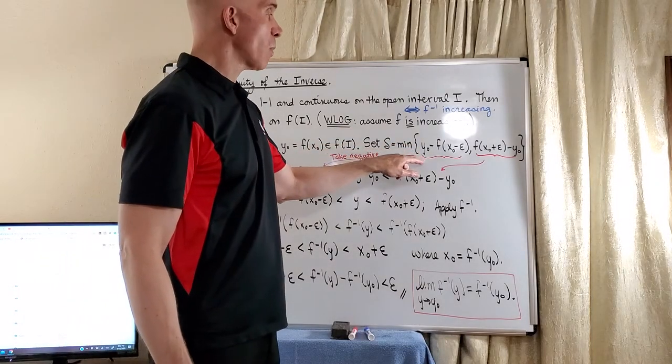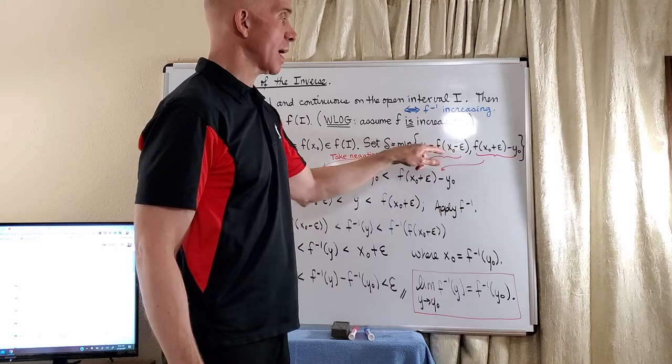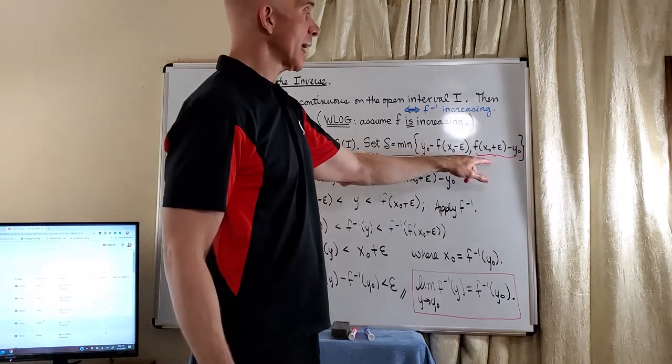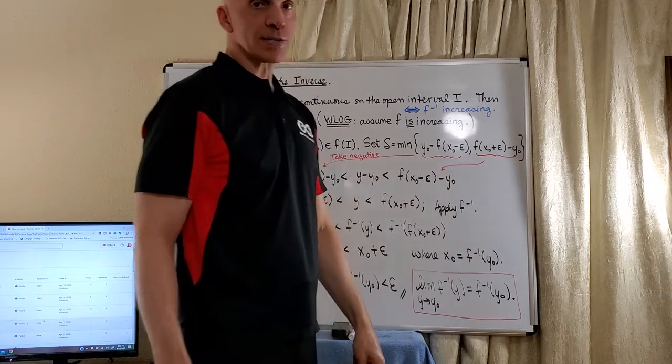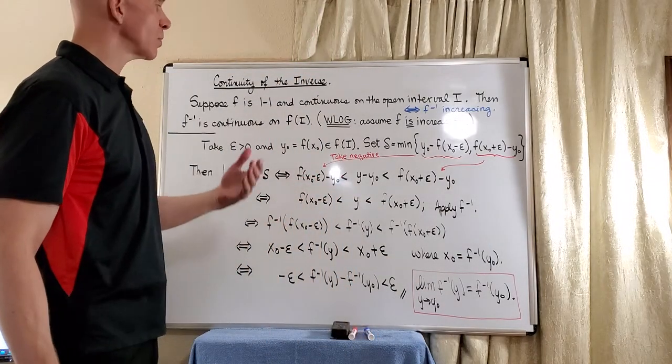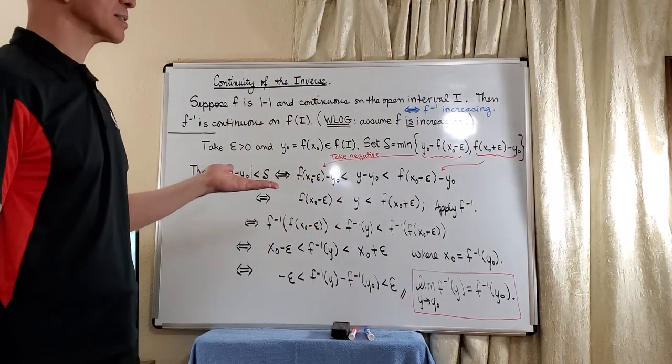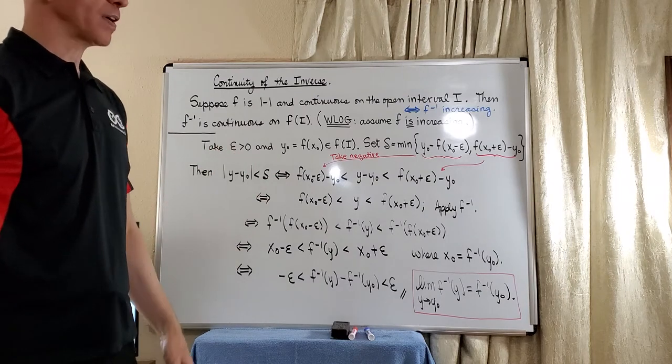That is, y-naught minus f of x-naught minus epsilon is a positive number, and f of x-naught plus epsilon minus y-naught is a positive number. We take epsilon positive, but it has to make sense for the function.